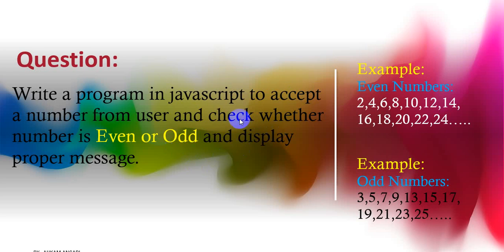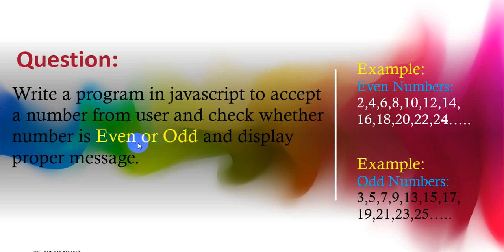Before moving toward solving the question, I just want to tell you a simple thing. I think 99% to 100% of students might already know what an even number or an odd number is. Even numbers: 2, 4, 6, 8, 10, 14, 16. Odd numbers: 3, 5, 7, 9, 13, 15, 17. You can check any number — not just up to 24 or 25, but any number. If you are given a prompt box, the user can enter any value, and you have to validate it using if-else, then display the result.